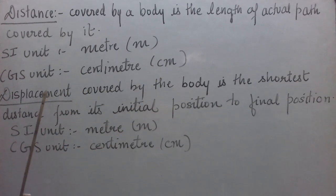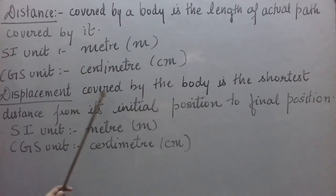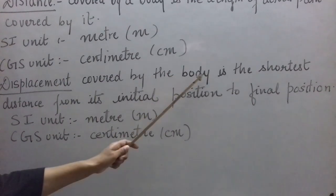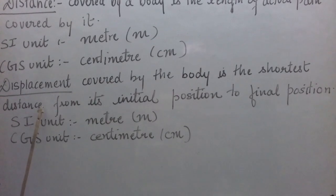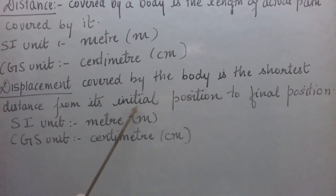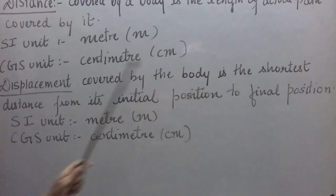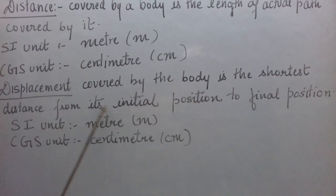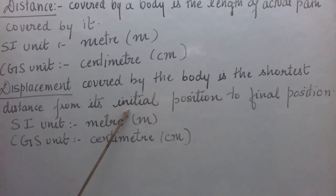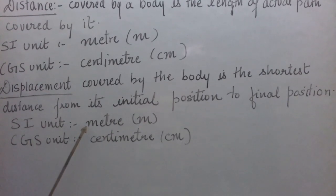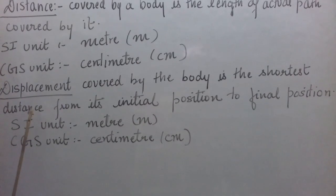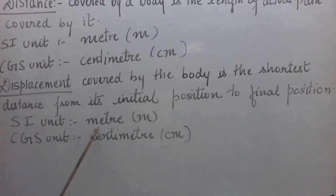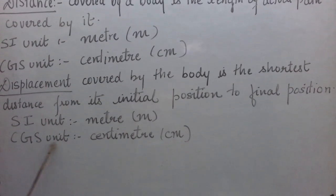Now let us see what displacement is. When the body is in motion, displacement covered by the body is the shortest distance from its initial position to its final position. Its SI unit is the same as distance — meter — and its CGS unit is centimeter, since displacement is also a type of distance.